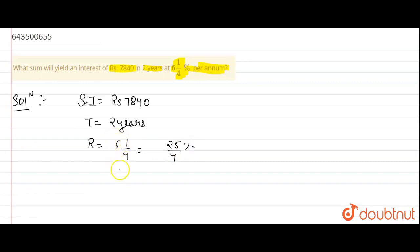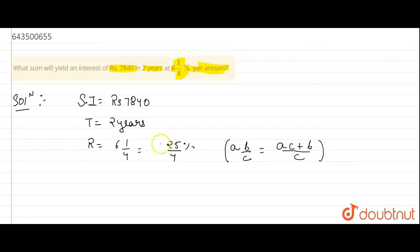So how have we converted 6 and 1/4 to 25 upon 4? Whenever you see any mixed number in the form A, B upon C, you simply use this formula to convert it. By using this formula, I have converted this term into this term.